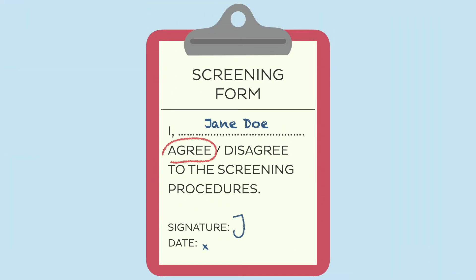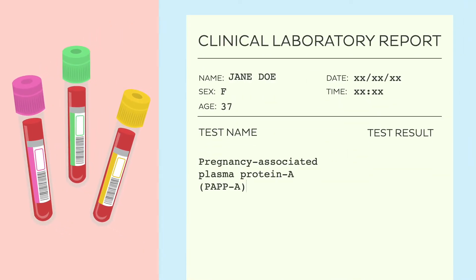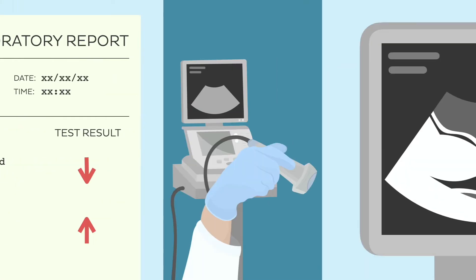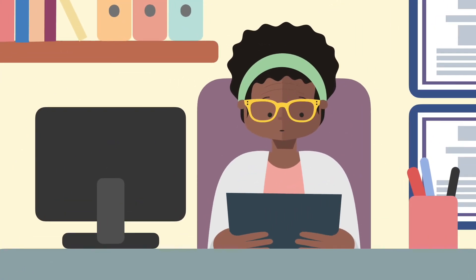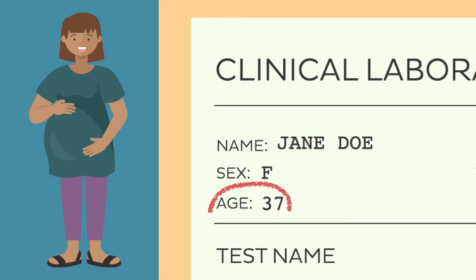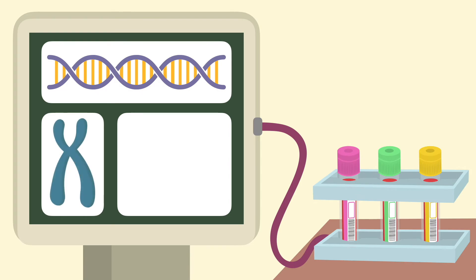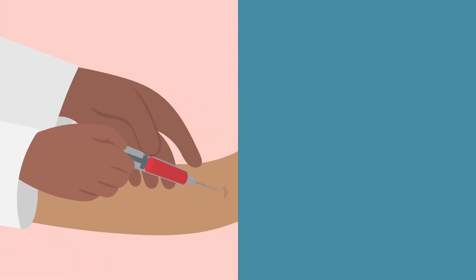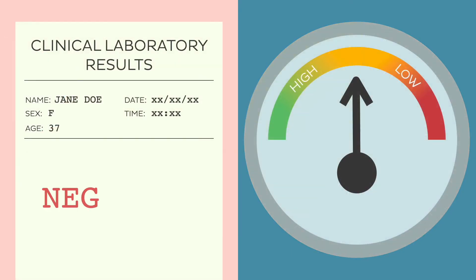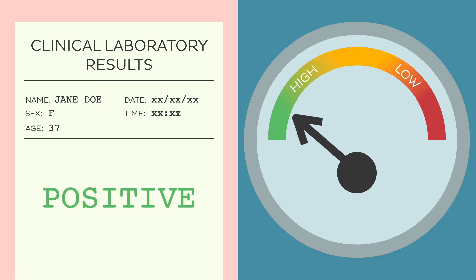If you decide to undergo screening, your doctor will request blood tests and ultrasound scans. The blood tests measure different substances in the mother's blood that might indicate a higher risk of the fetus having Down syndrome, while the ultrasound checks for certain characteristics associated with the diagnosis. More recently, a new screening test has been developed that measures chromosomal material from the fetus circulating in the maternal blood, requiring only a sample of the mother's blood and typically done during the first trimester. If the screening test is negative, the baby has a low chance of having Down syndrome; if positive, the risk is considered high. Remember, no screening test can tell you for certain whether the baby definitely has Down syndrome.